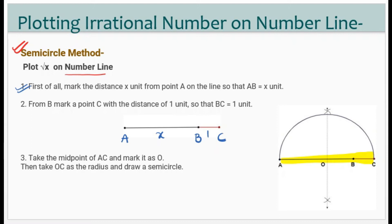Then draw a line segment from B to C such that BC equals 1 unit. Next, with the full length AC, draw a semicircle. To find the center: draw a perpendicular bisector of AC. Take A as center with radius more than half of AC, draw arcs above and below. Similarly taking C as center with the same radius, draw arcs. These two arcs will intersect at two points — join these two points to get the perpendicular bisector, and the midpoint O is the center.